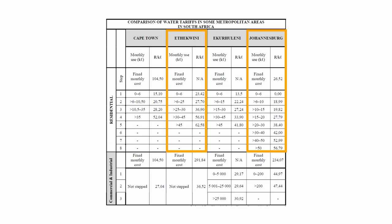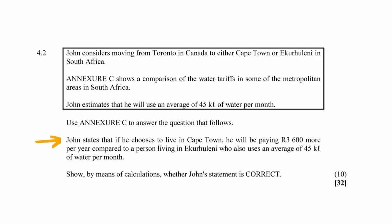If you make the mistake of using the incorrect areas, you will get the entire question wrong. John stated that if he chooses to live in Cape Town he will be paying R3600 more per year compared to a person living in Ekurhuleni, who uses an average amount of 45 kilolitres of water per month. You will have to prove by means of calculation whether his statement is correct.